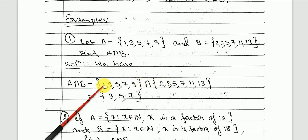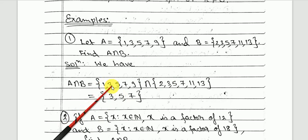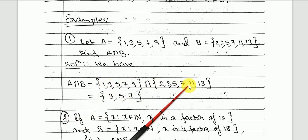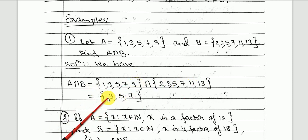Here you can see 1 is in A but not in B, so we don't include 1 in the intersection. 3 is in both, so we include 3. Similarly 5 and 7 are common. 9 is in A but not in B, so A intersection B = {3, 5, 7}.